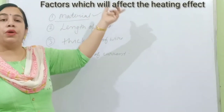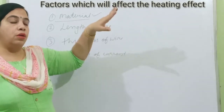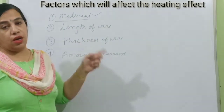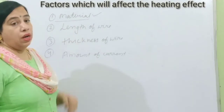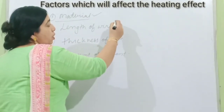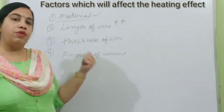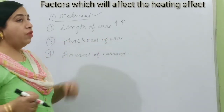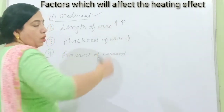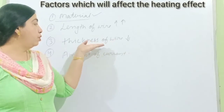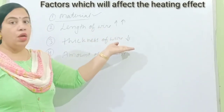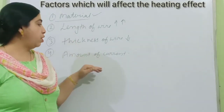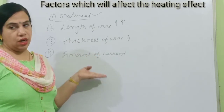The heating effect varies from material to material. In some materials the heating effect will be less, and in some materials when current passes the heating effect will be more. The length of wire also matters — more wire length means more heating effect. Thickness of the wire is also a factor: if the wire is thick, the heating effect will be less; if thinner, the effect will be more. It also depends on the amount of current — more current means more heating effect, less current means less heating effect.